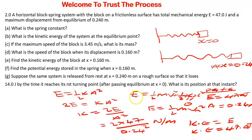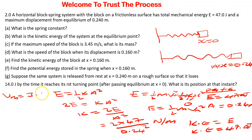Part B is 47.0 joules. Then part C is saying: if the maximum speed of the block is 3.45 meters per second, what is its mass? The maximum speed V_max is equal to 3.45 meters per second.